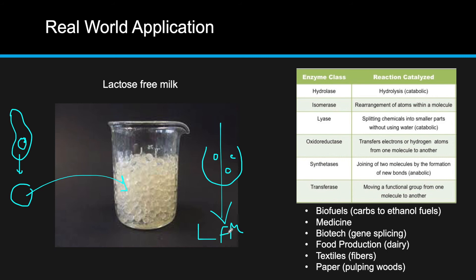This process can be done multiple times. Since these enzymes are not used up, we can keep producing lactose-free milk. Here are some other examples of industrial enzyme applications — you won't need to know specific names but you will need to know generally what they're used for: making fuels, use in medicine, biotechnology and gene splicing, food production and dairy, textiles and fiber processing, and paper production through pulping of wood.